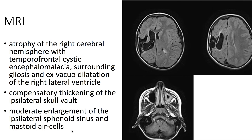On MRI, we see that there's atrophy of the right cerebral hemisphere with temporofrontal cystic encephalomalacia and surrounding gliosis. There's also ex-vacuo dilatation of the right lateral ventricle.